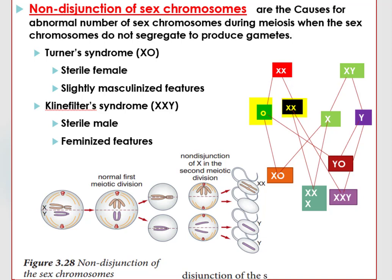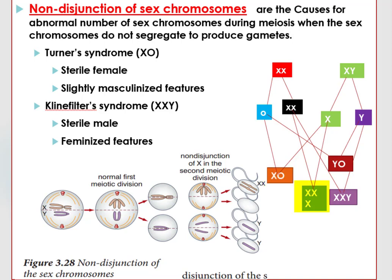Of course, these gametes still carry autosomal chromosomes. If male sex chromosomes segregate properly and produce X and Y chromosome-containing gametes, when these gametes fuse randomly they can produce offspring with abnormal chromosome numbers: X0 with 45 chromosomes, XXX with 47 chromosomes, XXY with 47 chromosomes, and Y0 with 45 chromosomes — though Y0 is nonviable and does not develop into an embryo.